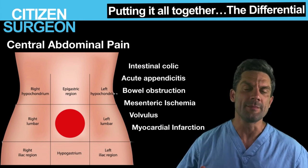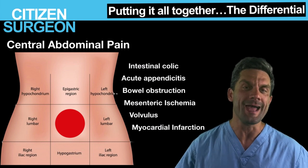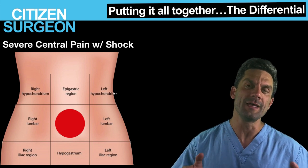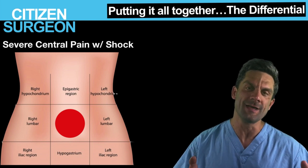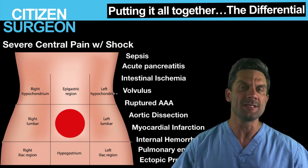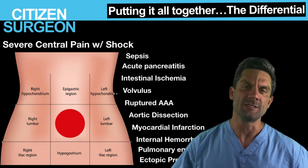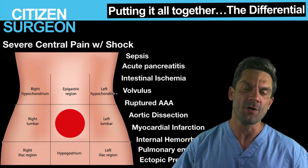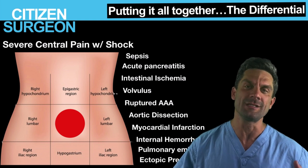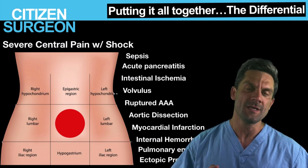If somebody has central abdominal pain and is now decompensating with shock, this could be everything from sepsis and septic shock, to intestinal ischemia, myocardial infarction, ruptured AAA, aortic dissection, or ectopic pregnancy. While you rapidly start treating the patient, you've got to figure out the etiology of their decompensation.